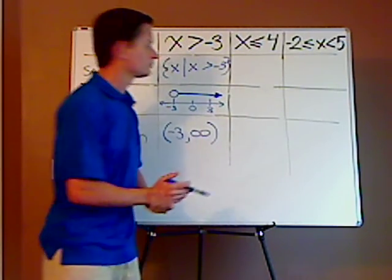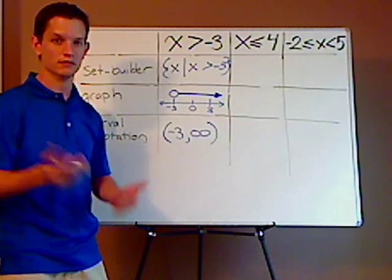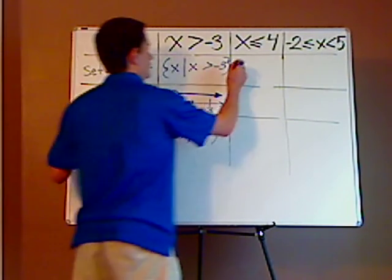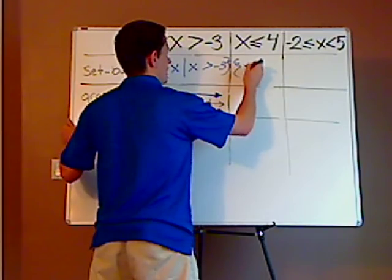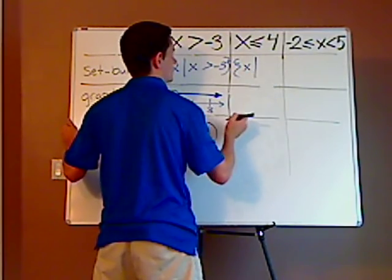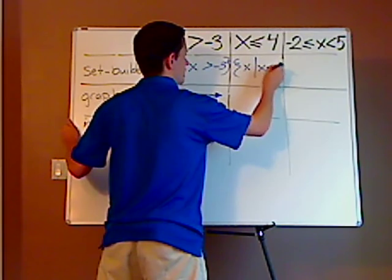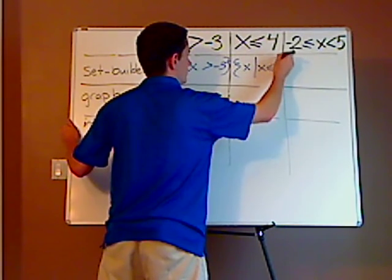So looking at this one, what you should have put if you did try this one on your own, should have gotten the set braces X such that X is less than or equal to four.